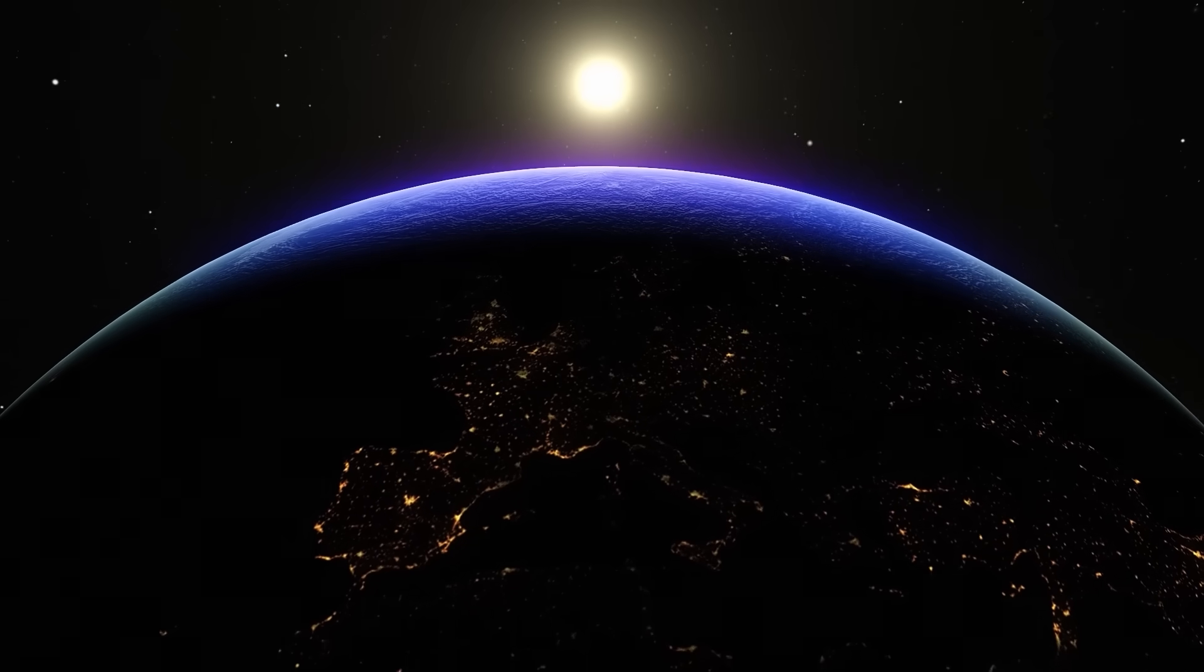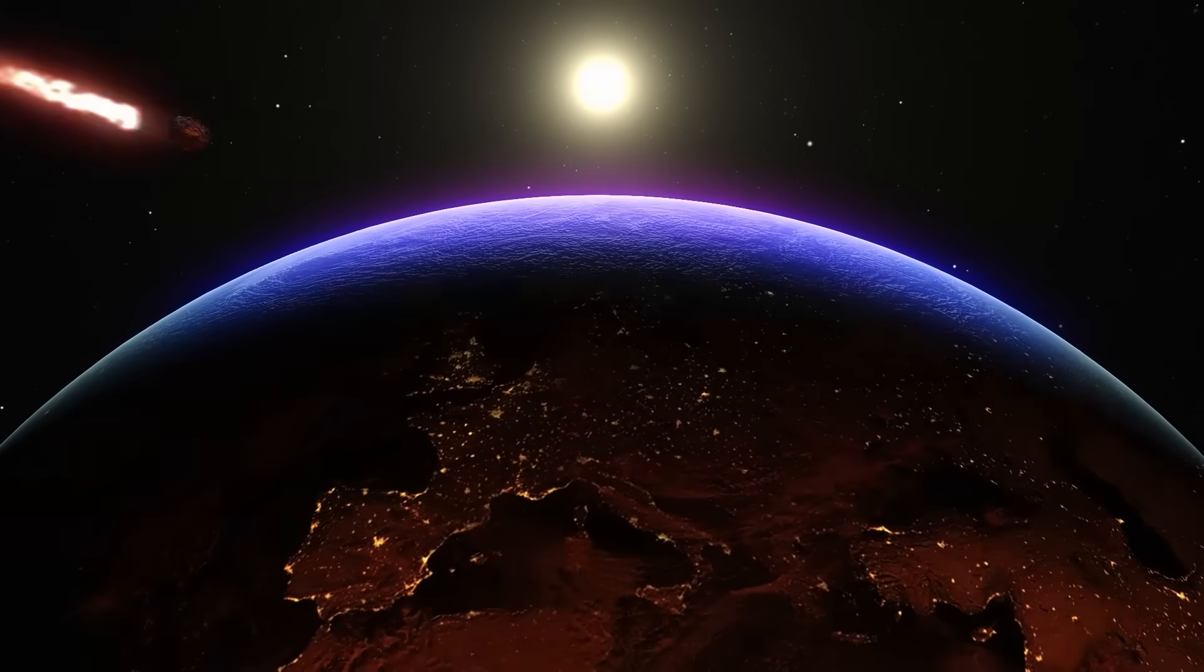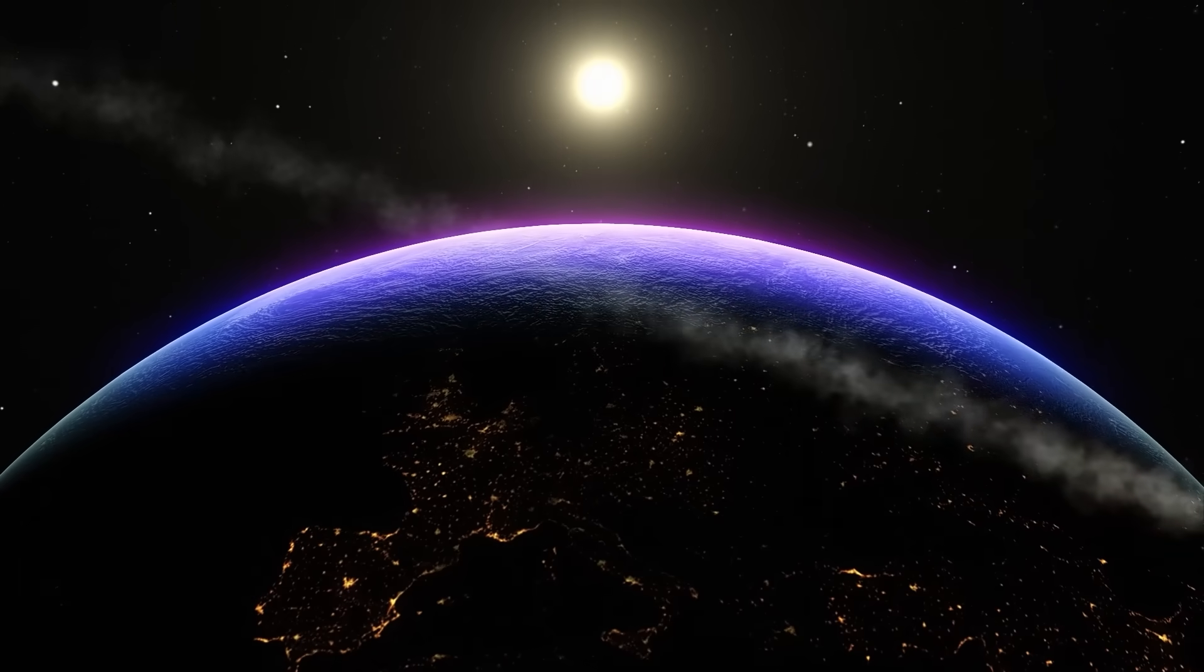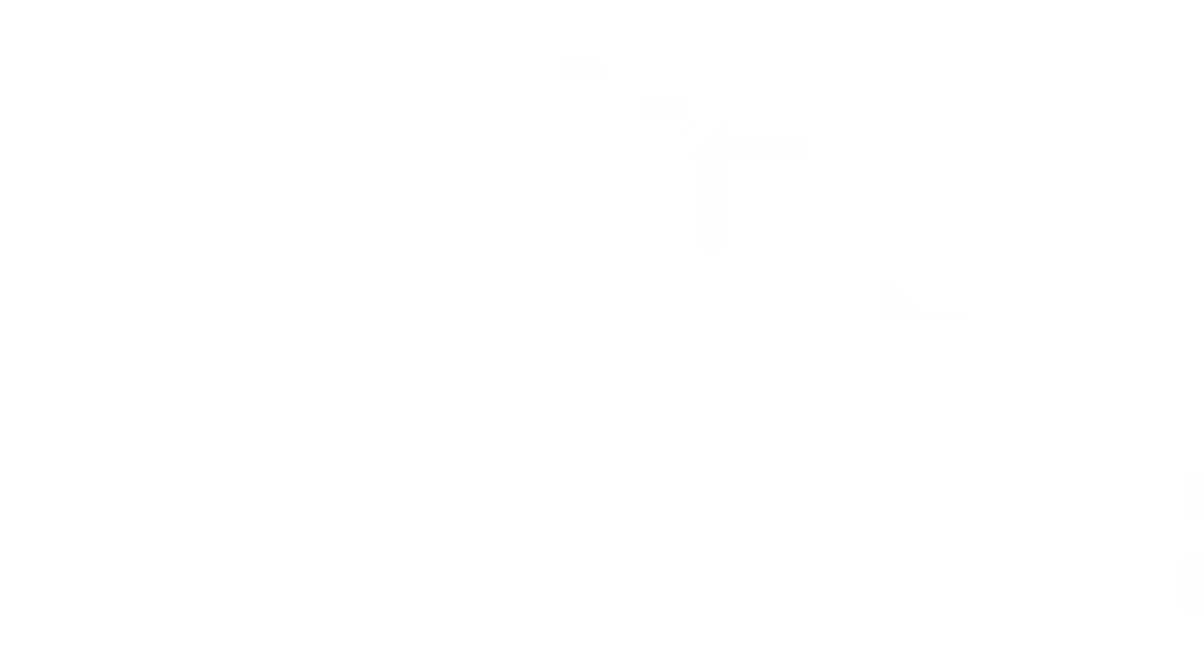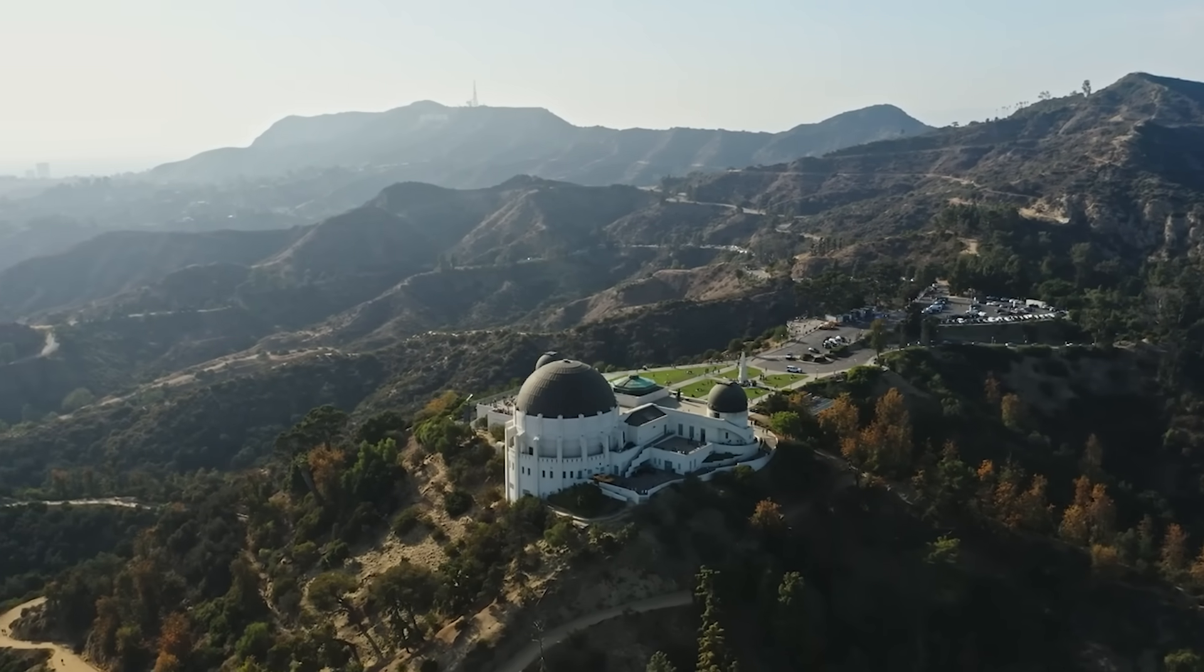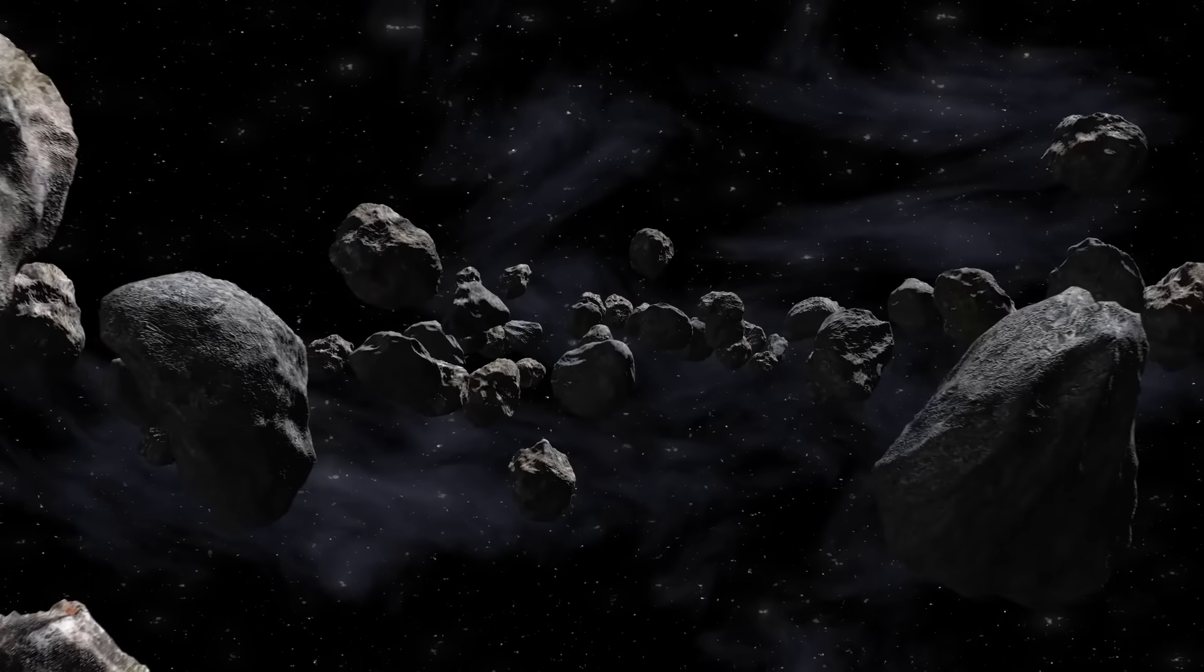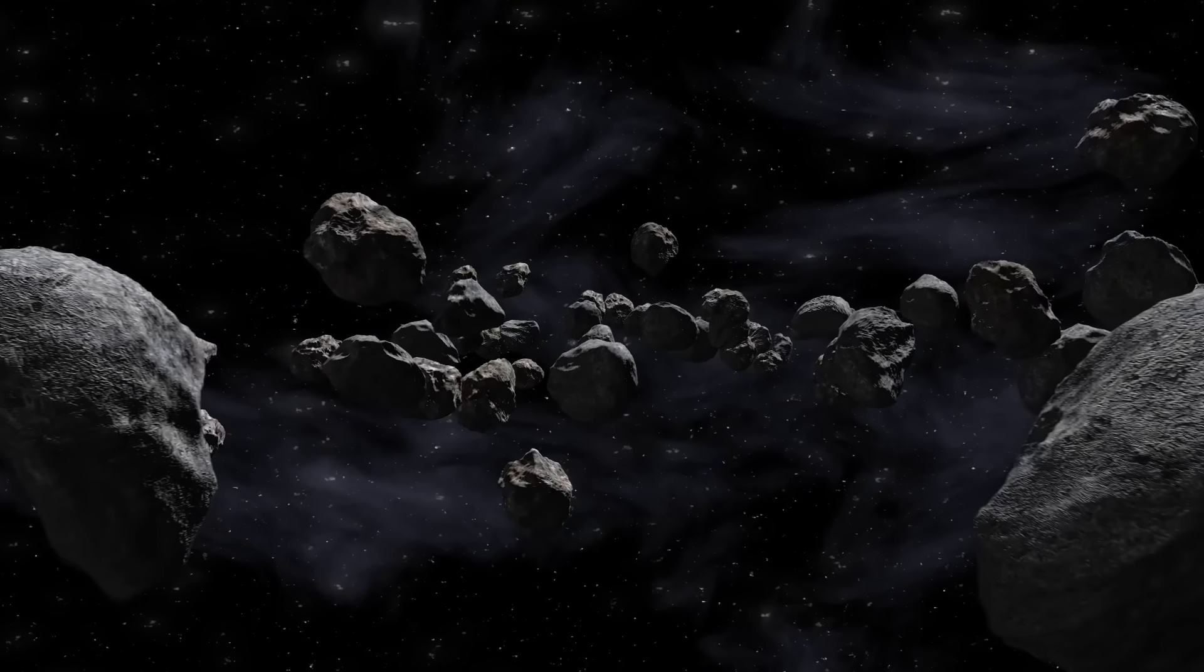The International Asteroid Warning Network, or IAWN, has one purpose: to detect and prepare for threats that could endanger life on Earth. It's a coalition of the world's most powerful observatories, from NASA and ESA to China's Purple Mountain Observatory. Until now, it has only ever monitored near-Earth asteroids, debris born within our own solar system.